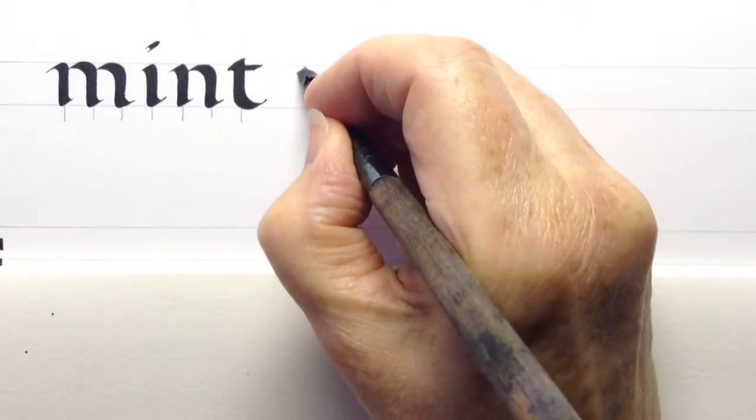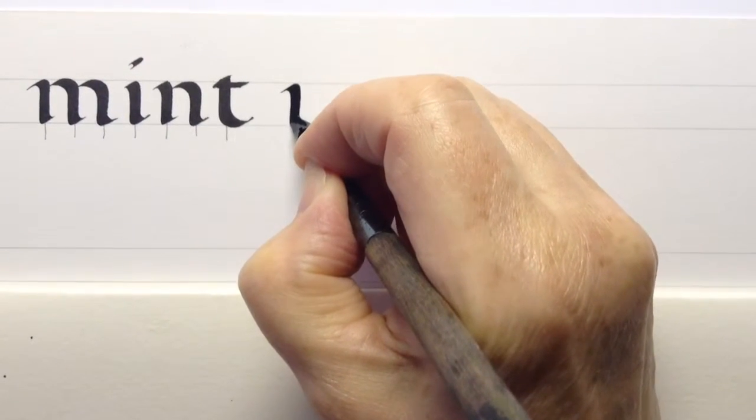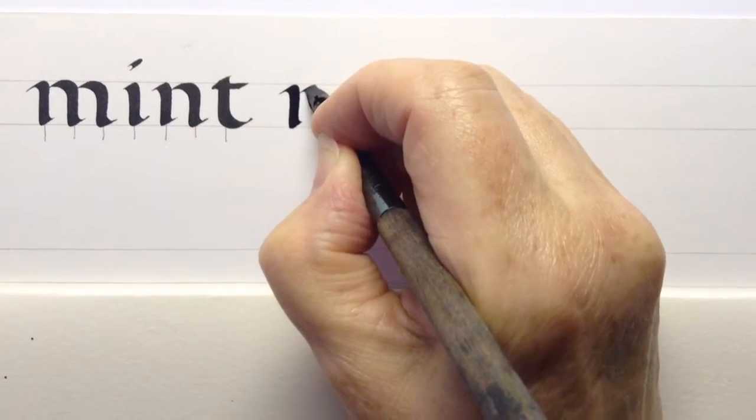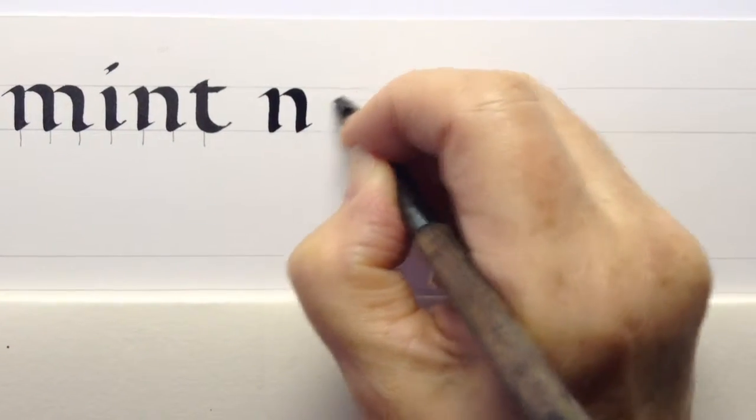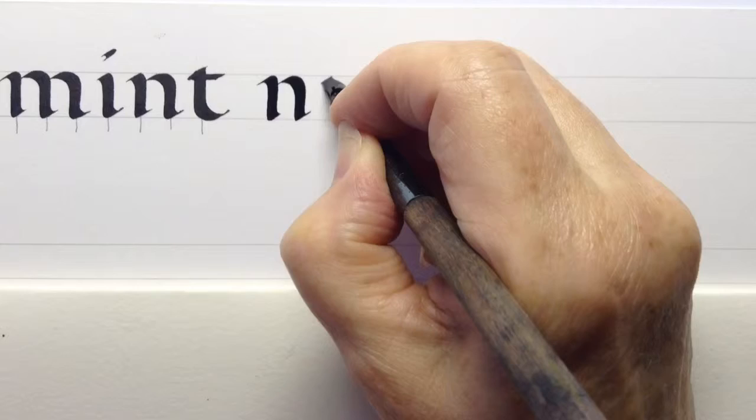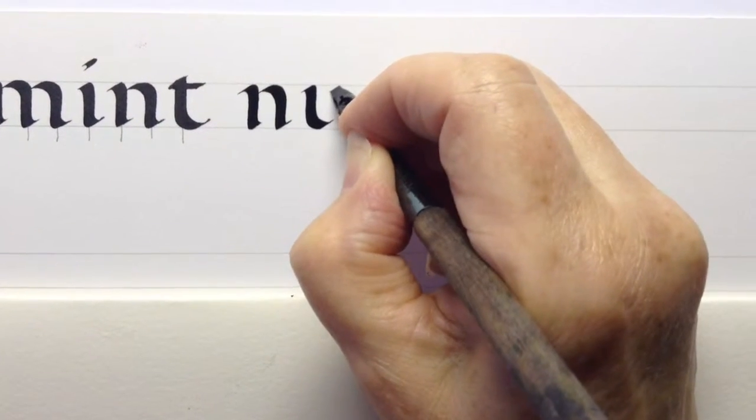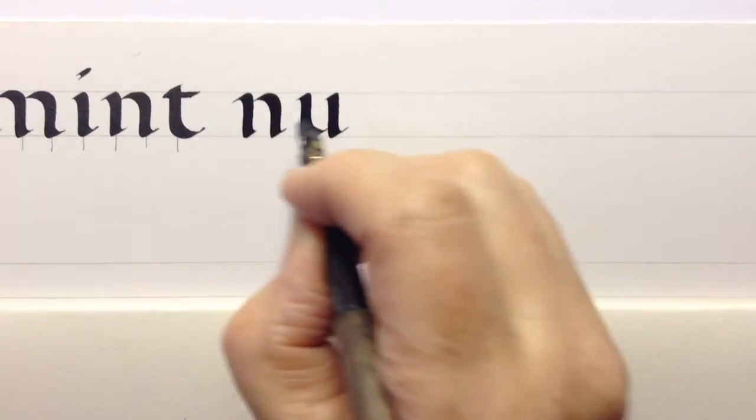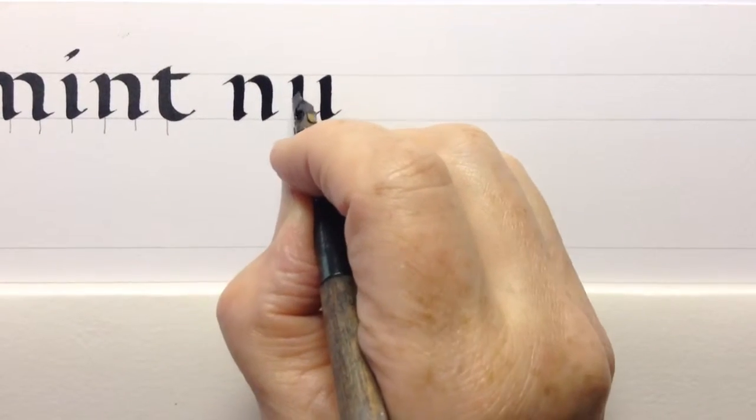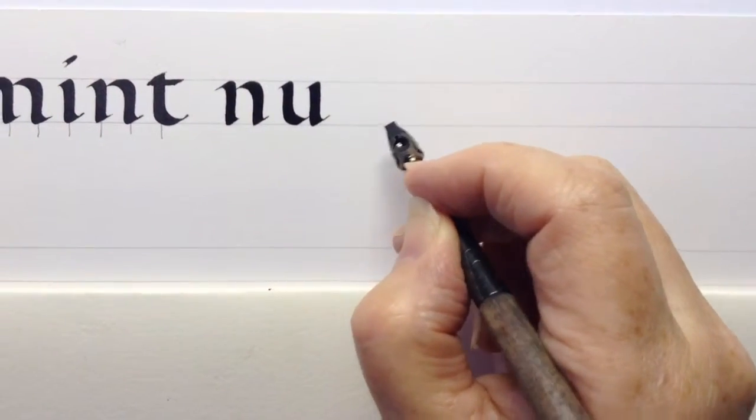So if I'm going to be writing the letter N, where should I start for the letter U? Well, I'm trying to make sure that the space between there and there looks about the same as the space between there and there, and there and there, to get a lovely evenness of texture.